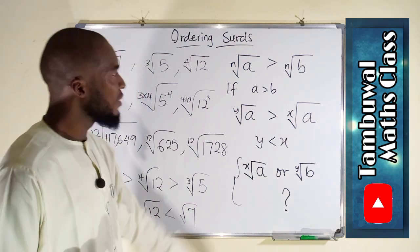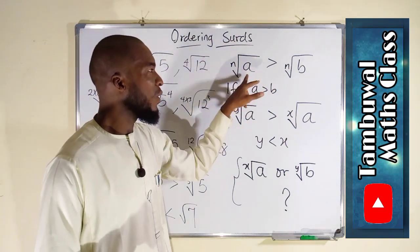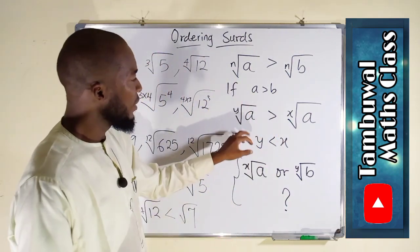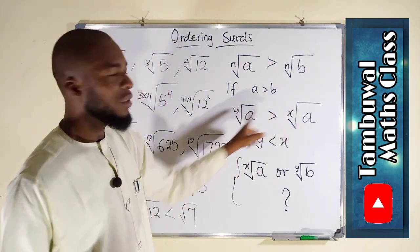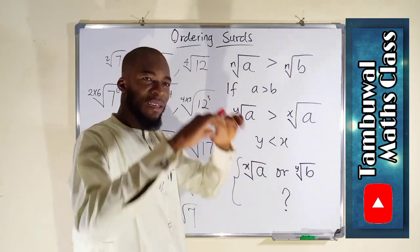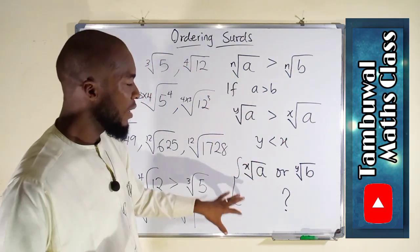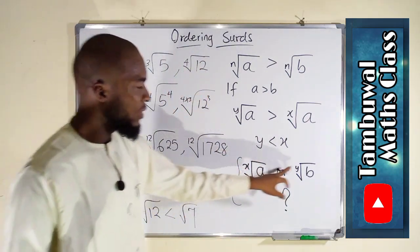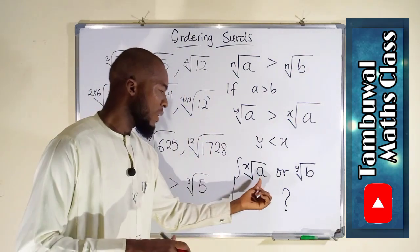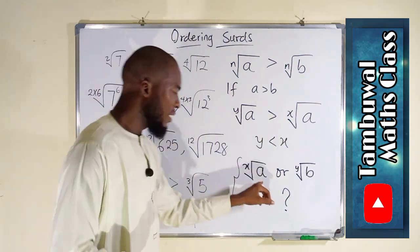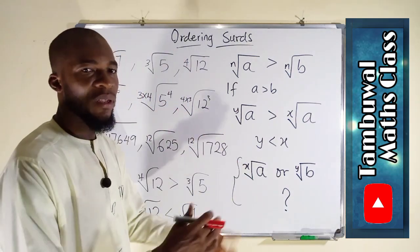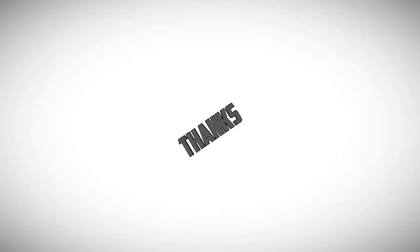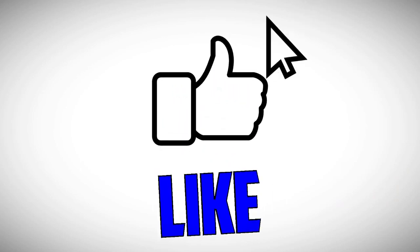So this is exactly how to order surds. Applying these three conditions: if they have the same degrees, consider the radicands — the greater the radicand the greater the surd. If they have the same radicand, consider the degrees — the less the degree the greater the surd. If everything is entirely different, convert their degrees into the same value using LCM, then compare radicands. Thank you for watching, have a nice day.